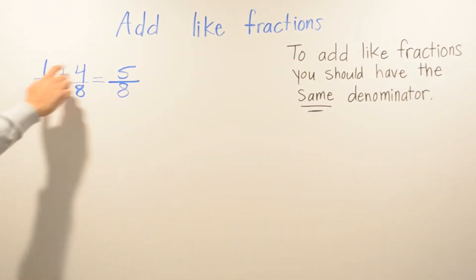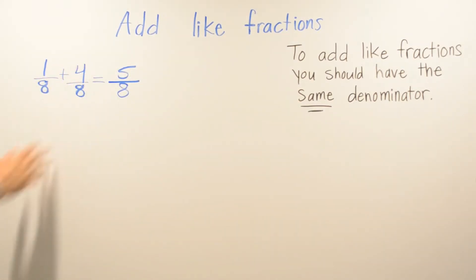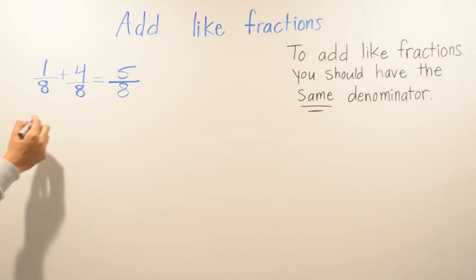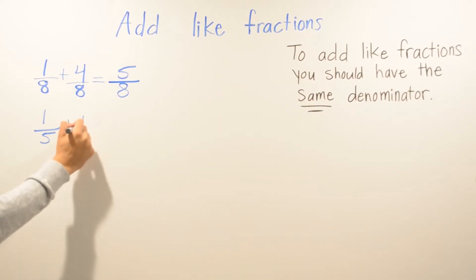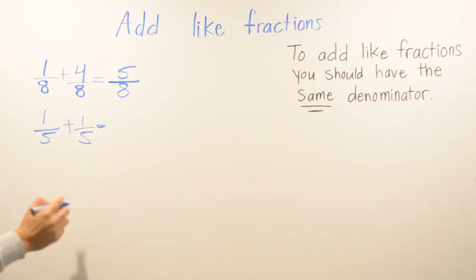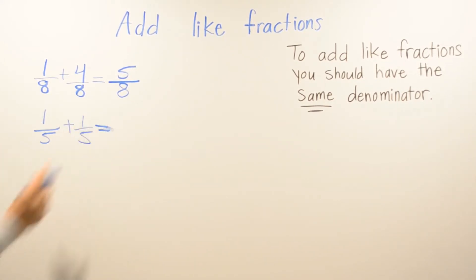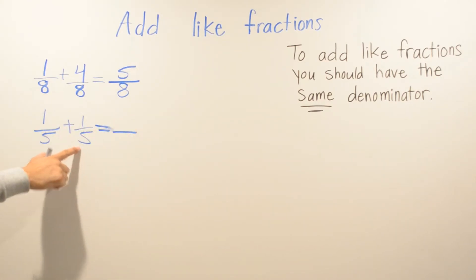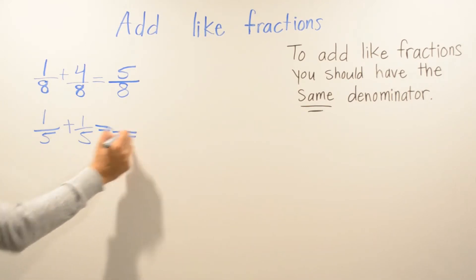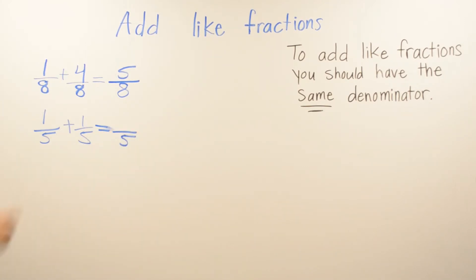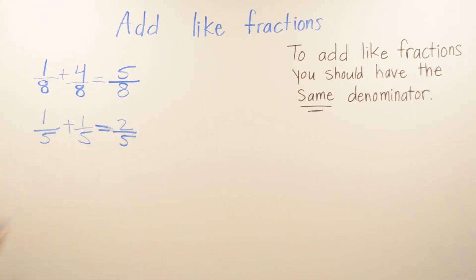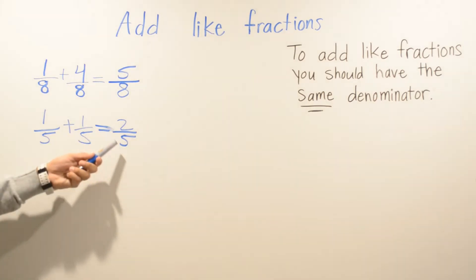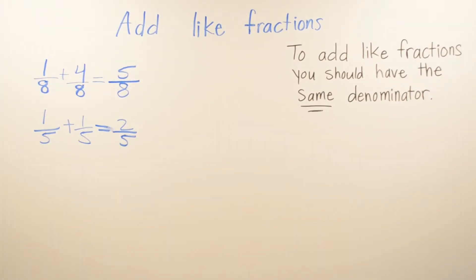That's the only thing that changes — the top part, not the bottom. On the next example we have 1 fifth plus 1 fifth. The denominator doesn't change, we leave it the same, so it's going to be 5. The only thing that changes is the numerator: 1 plus 1 is 2. So the answer is 2 fifths.